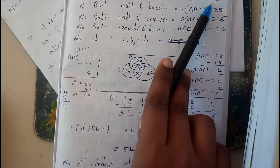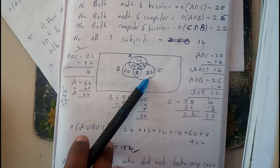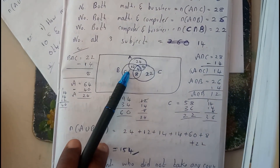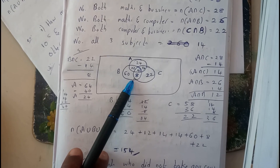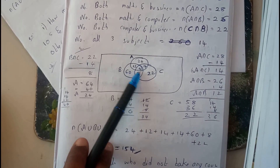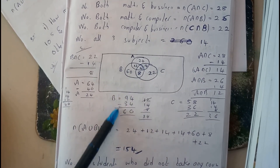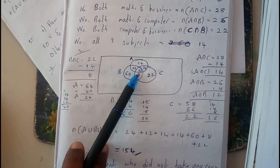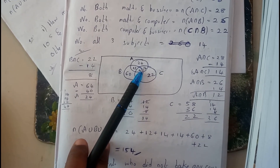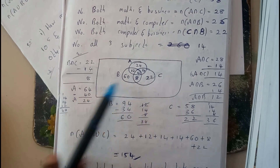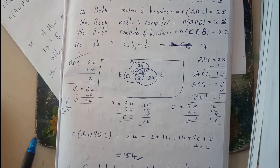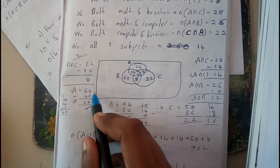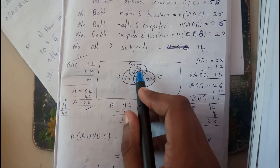For Computers (B), total is 94. Already in B: 12 plus 14 plus 8 equals 34. So 94 minus 34 equals 60 — students in B only is 60. For Maths (A), total is 64. Already in A: 12 plus 14 plus 14 equals 40. So 64 minus 40 equals 24 — students in A only is 24.